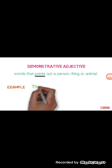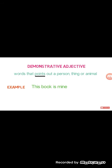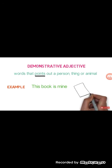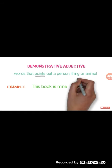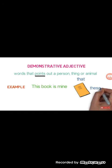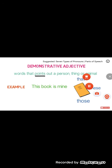Now what is demonstrative adjective? Words that point out a person, thing, or animal are known as demonstrative adjectives. For example: 'This book is mine' — here I am pointing out the book. Some more examples of demonstrative adjectives are: that, these, and those. If you remember, in pronouns we also discussed about demonstrative pronouns.